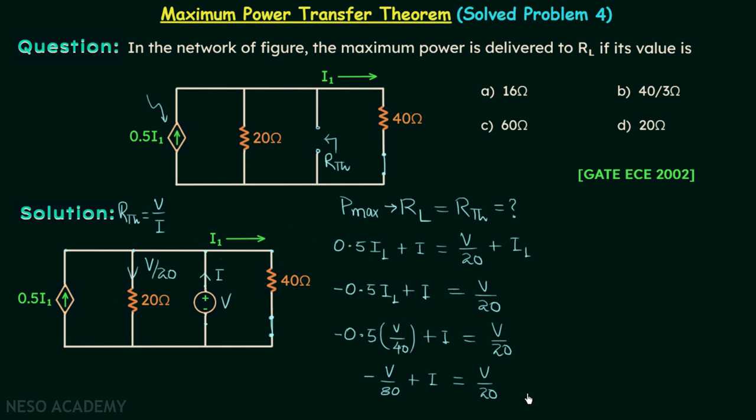Adding V/80 to both sides, we have I equals V/20 plus V/80. So I equals 4V plus V divided by 80, or I equals 5V/80 equals V/16. This gives us V/I equals 16 ohms.